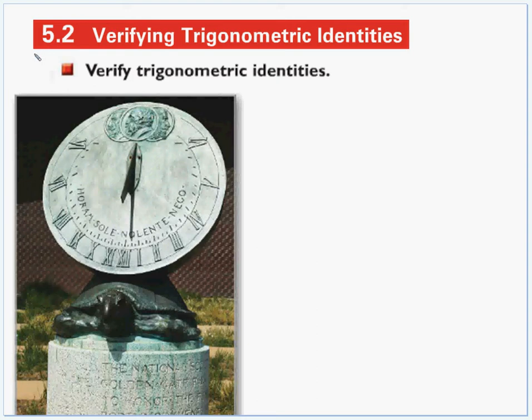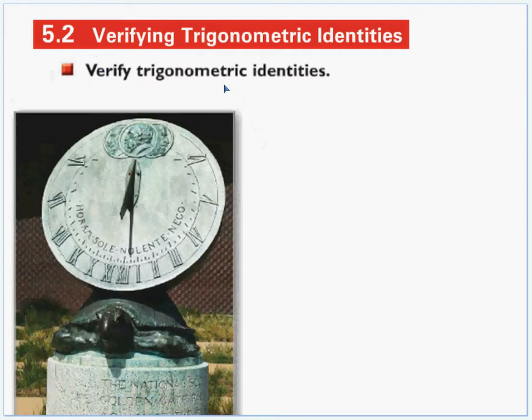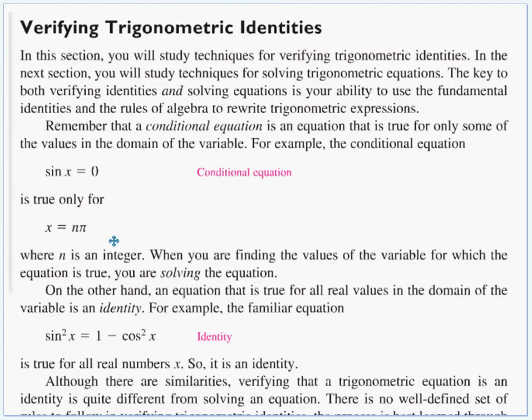Welcome to Pre-Calculus, Section 5.2. If you're still a little confused on what happened in Section 5.1, don't worry, this should clear up a lot of the confusion, if not all of it. Let's see here, very simple bullet points. Only one thing to do: verify trig identities. But first, let's talk about what are identities.